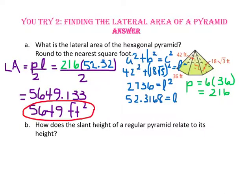For part B, how does the slant height of a regular pyramid relate to its height? The slant height is the hypotenuse of the right triangle formed with the height and the apothem — or, in a square pyramid's case, half the base. So the slant height will always be longer than the actual height.